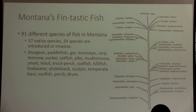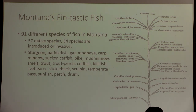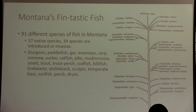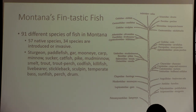Montana has 91 different species of fish — 57 are native and 34 are either introduced or invasive. Looking at the fish family tree from 'Fish Watching': lampreys are the earliest, then sturgeons and paddlefish and gars. These oldest fish species have changed very little over millions of years — they're really cool. Then we evolve more into freshwater eels and bowfins.